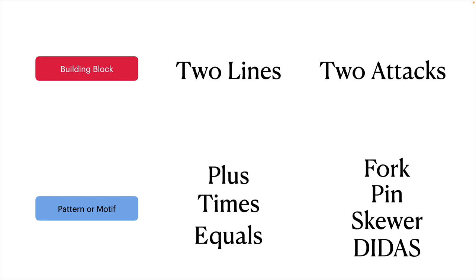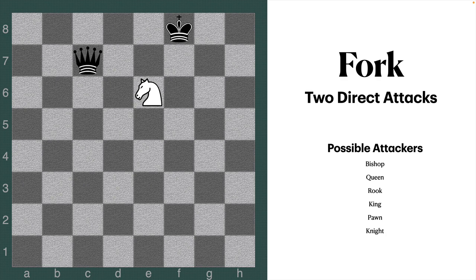I hope you understand that analogy — it can be applied and reapplied multiple times. Your job is to figure out the differences between similar attacks and the similarities between different tactical motifs. Let's start with the fork. A fork is a combination of two direct attacks. An attack is your piece aiming at an opponent's piece — not yet capturing it, just aiming at it. In this example, a knight attacks both the king and the queen at the same time. It doesn't matter where on the board it occurs or which pieces are involved — two direct attacks is all you need for a fork. Possible attackers include bishop, queen, rook, king, pawn, and knight.